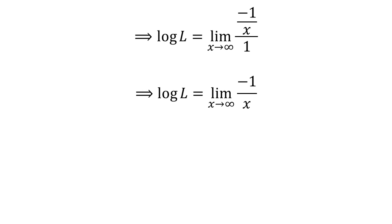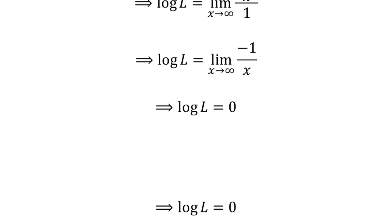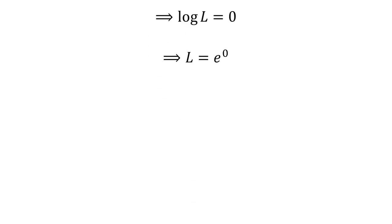Further simplification gives us log of L is equal to the limit of minus 1 upon x as x approaches infinity. As x approaches infinity, 1 upon x approaches 0, so log of L is equal to 0. Taking exponential of both sides gives us L is equal to exponential of 0. As exponential of 0 is equal to 1, so L is equal to 1.